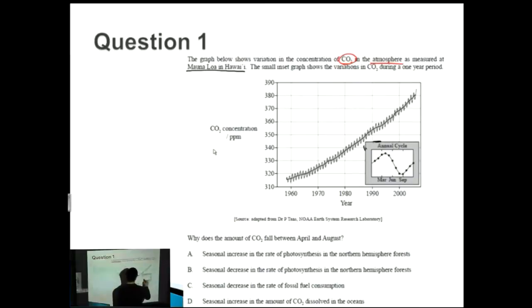We have to answer why the amount of CO2 falls between April and August. April and August is from about here to about here, so we do have this definite decline and we have to explain why. Let's look at the different answers.